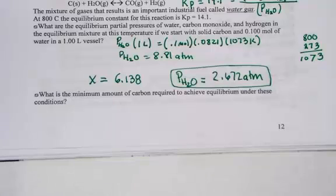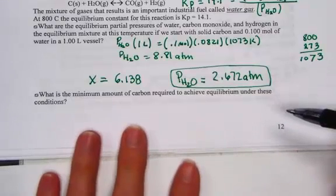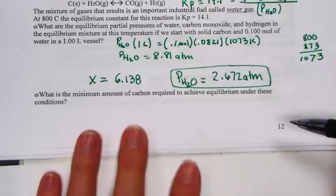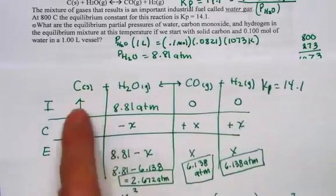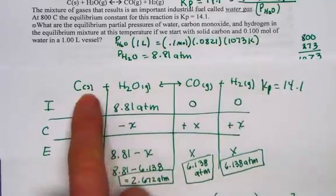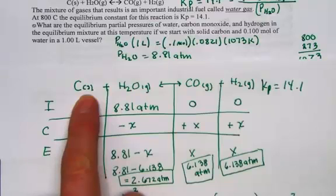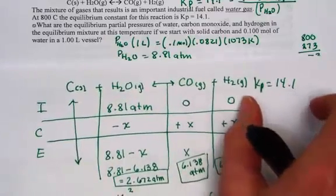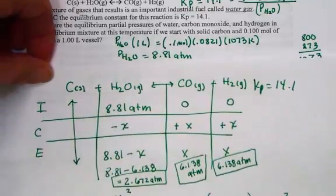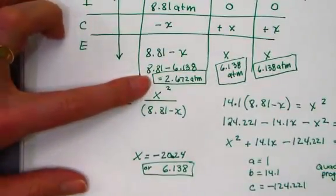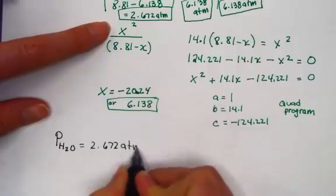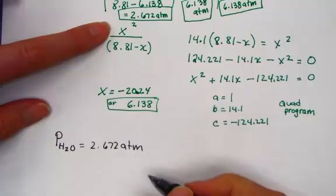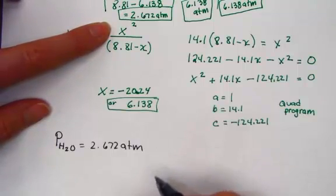The next part says, what is the minimum amount of carbon required to achieve equilibrium under these conditions? Knowing that the carbon did not play a role when we did our equilibrium expression, it is still part of the overall chemical equation and there is a certain minimum amount of grams needed to start this reaction. Here's what we know so far from the last problem, that at equilibrium we had a partial pressure of water as 2.672 atmospheres. Using this information and the stoichiometry, we can figure out the number of moles of water at the equilibrium.